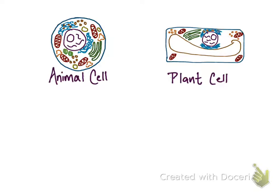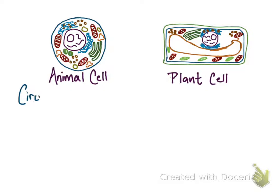One of these differences is that the plant cell is square, or at least more rectangular, compared to the animal cell, because the animal cell is circular. This is the first difference we're going to note down: animal cells are circular, while plant cells are square, or at least more rectangular.